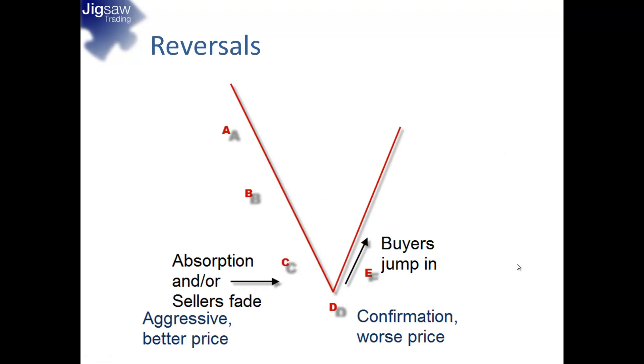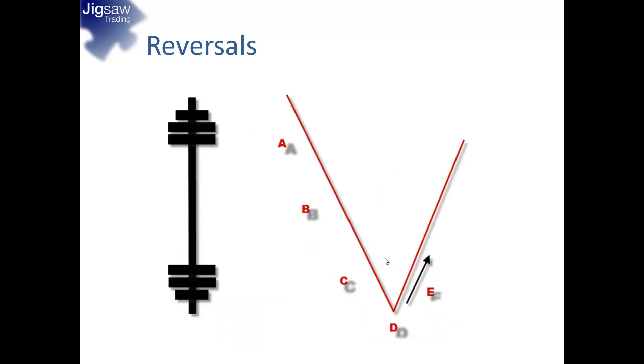Now, we looked at reversals in the first three webinars and we looked at the way that when a reversal occurs we have a move down. We then see absorption or we see the sellers fade away, and then the buyers start to jump in and we get a move up. Now that's still valid and that still holds, but what I want you to do is instead of thinking of a swing down and a swing up, I want you to put another picture in your mind. And the picture I want you to have in your mind is of a barbell. The barbell, we know, is thin in the middle and thick and heavy at the outsides. And that is actually what we expect from the market.